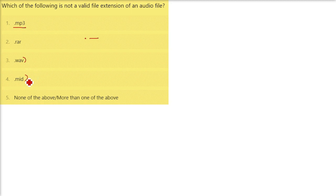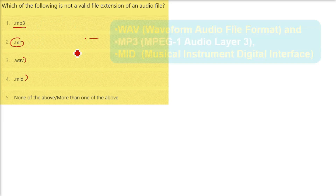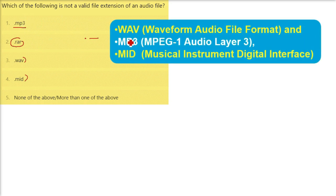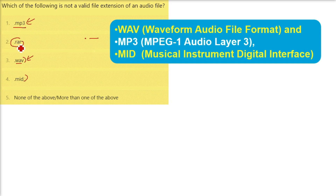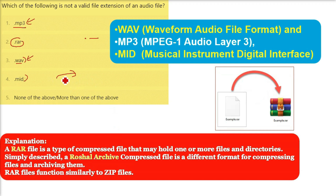.rar is the odd one out. MP3 stands for MPEG Audio Layer 3, WAV is Waveform Audio File Format, and MIDI or .mid is Musical Instrument Digital Interface. All of these are valid audio file extensions, but .rar is a file extension used to compress files.